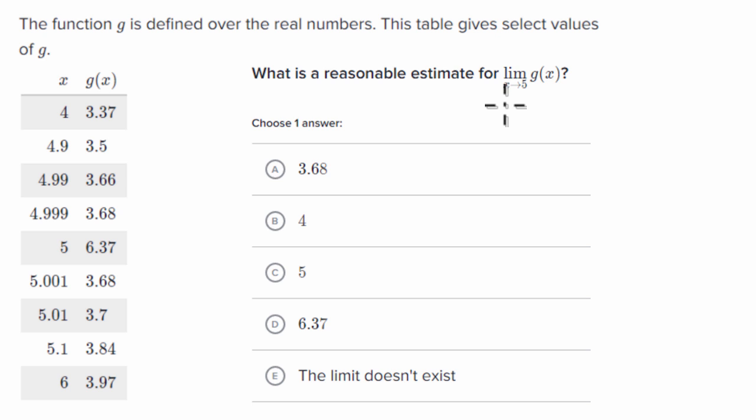All right, now let's work through this together. So let's think about what g of x seems to be approaching as x approaches five from values less than five.